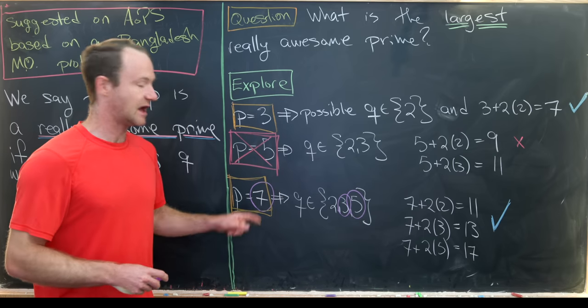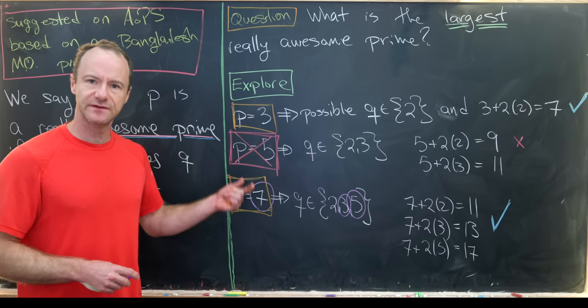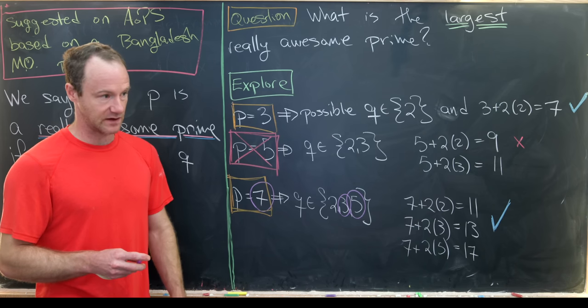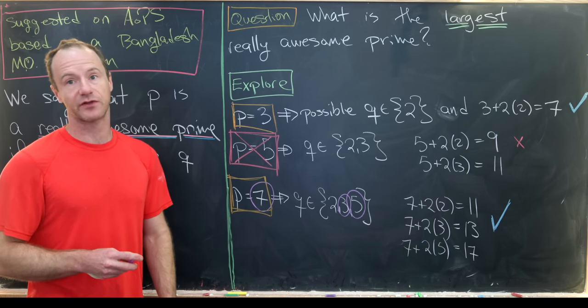Those are primes that are each separated by 2. We have 3, 3 plus 2, and 3 plus 4. That's because if you go higher than that, you're guaranteed to have one of them a multiple of 3.